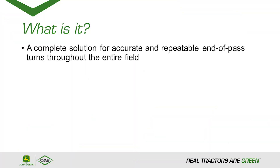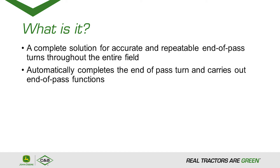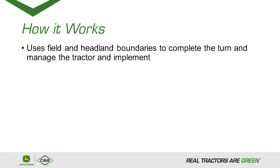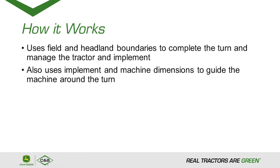So what is Auto-Track Turn Automation? It's a solution from John Deere that provides accurate and repeatable end-of-pass turns throughout the entire field. It automatically creates the end-of-pass turn and carries out the end-of-pass functions. The system creates a turn and manages the implement using field and headland boundaries as a reference point, utilizing machine dimensions to accurately guide the tractor and implement around an optimal end-of-pass turn.